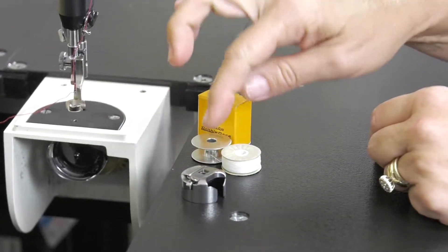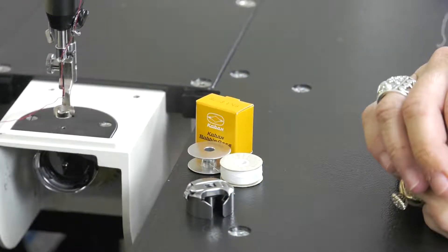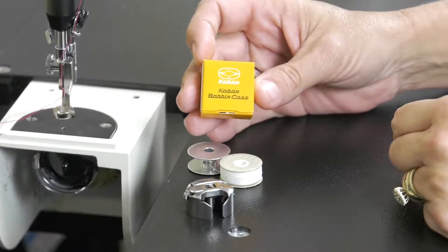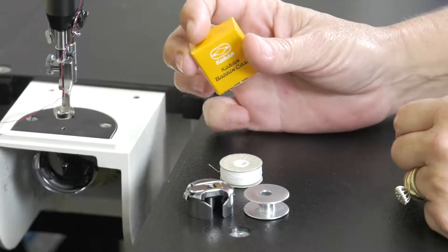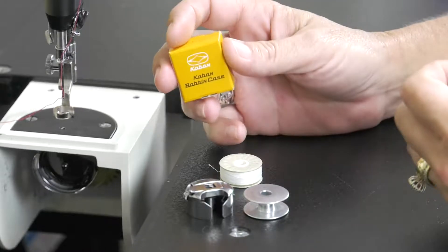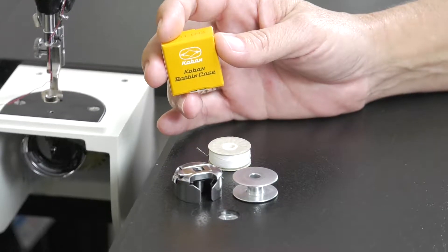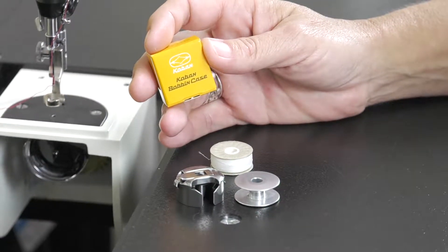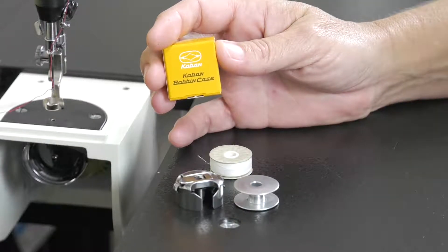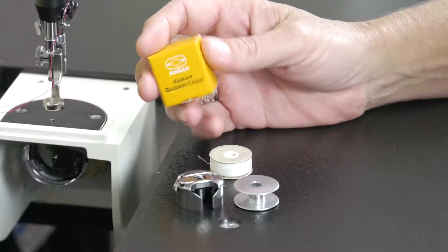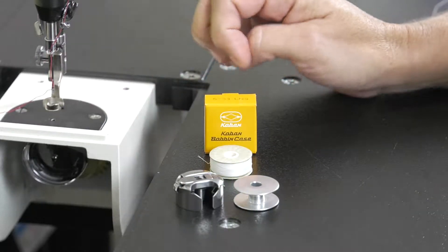Should you need extras or have an issue that your bobbin is just not working properly, you want to use bobbins and bobbin cases that you've purchased from the manufacturer, which would be Martelli. Due to the different manufacturing tolerances, it's strongly recommended that you always purchase your bobbins and bobbin cases from the manufacturer. That way it ensures that you've got the proper case and bobbin that will work in your machine.